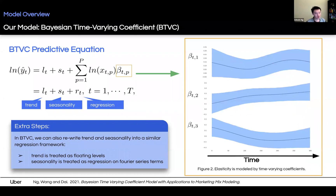In our BTVC approach, instead of modeling the response directly, we start with the log of response. This way, after the anti-log transformation, we can retrieve a multiplicative model. The predictive equation can be decomposed into trend, seasonality, and regression. The regression component contains a time-varying coefficient as shown on the right-hand side. Notice that we can also write trend and seasonality into a similar regression framework so that we can leverage the time-varying coefficient method to model trend and seasonality as well.